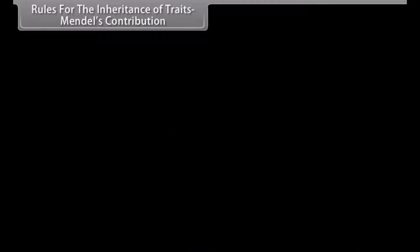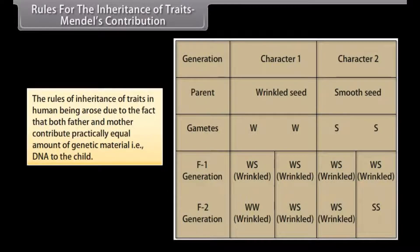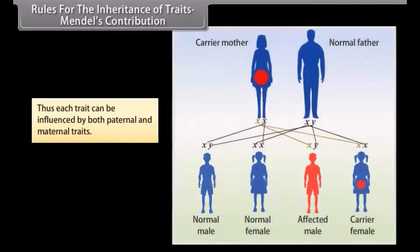Rules for the Inheritance of Traits — Mendel's Contribution: The rules of inheritance of traits in human beings arose due to the fact that both father and mother contribute practically equal amounts of genetic material, that is DNA, to the child. Thus each trait can be influenced by both paternal and maternal traits.